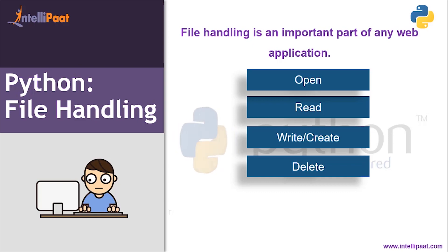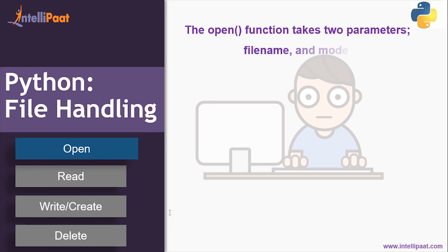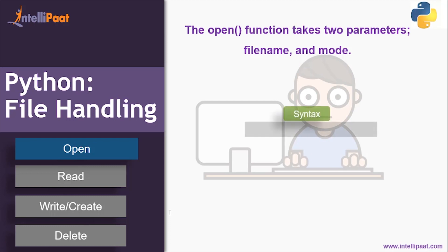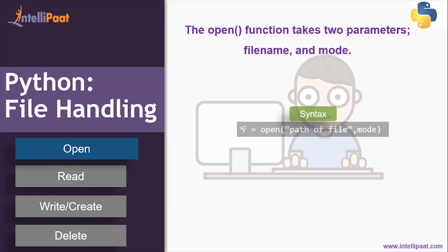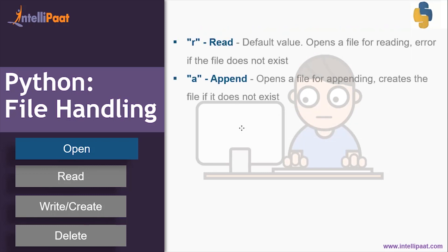You can open, read, write, and delete a file using Python. Let's see them one by one. The first one is open — you can use the open() function to open a file. It takes two parameters: the file name and the mode. The syntax is: f = open(path_of_file, mode).